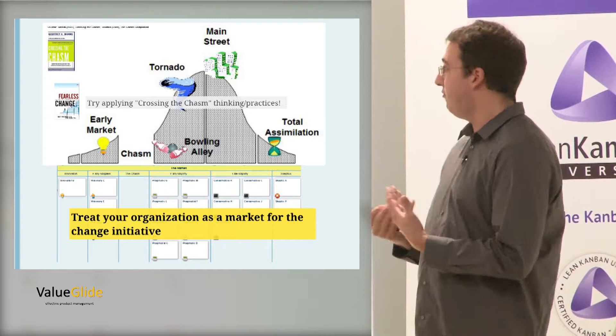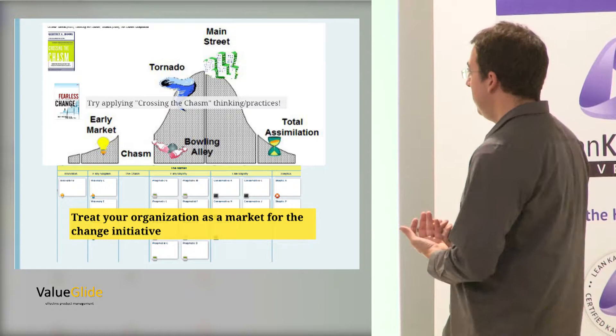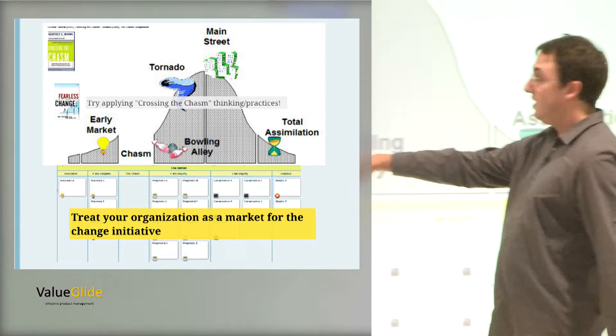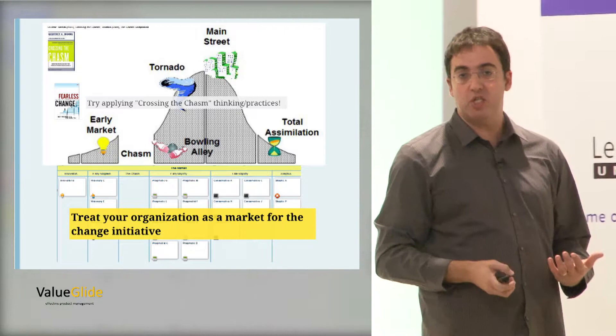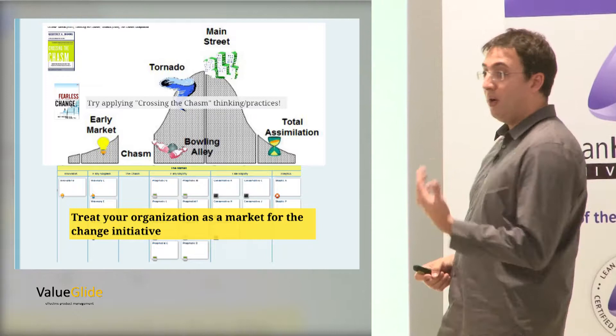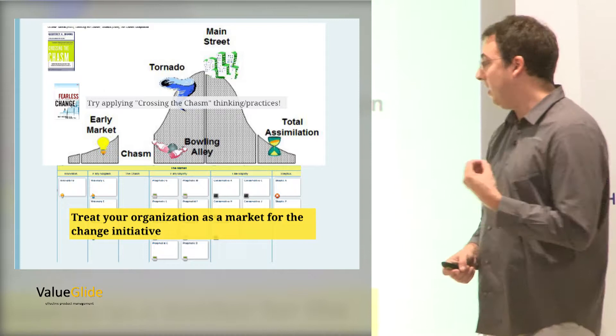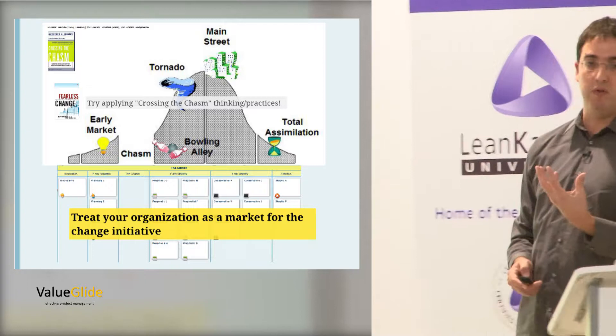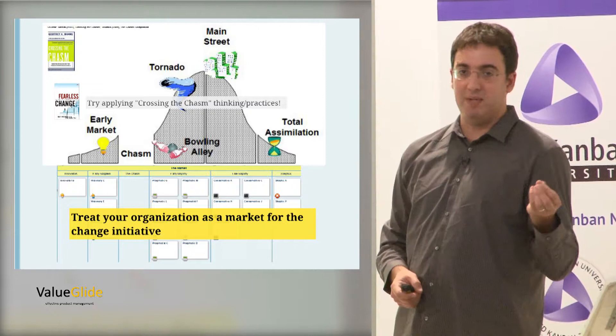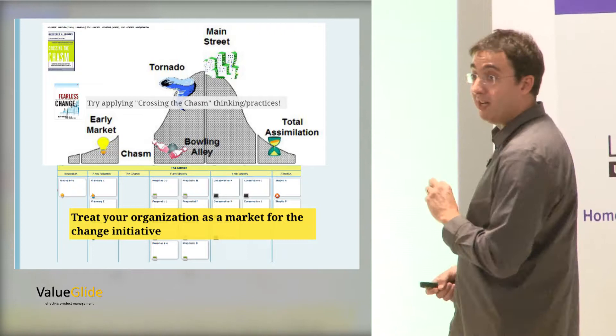So basically what we are seeing is Geoffrey Moore's model that talks about the fact that there are different kinds of customers in the market, and we have this flow from the early market through the chasm before the mainstream, and this is something that we see in our change initiatives as well if we look for it. And what I'm suggesting and we're doing is treat your organization as the market for the change initiative. And then use what Jeffrey Moore talks about.